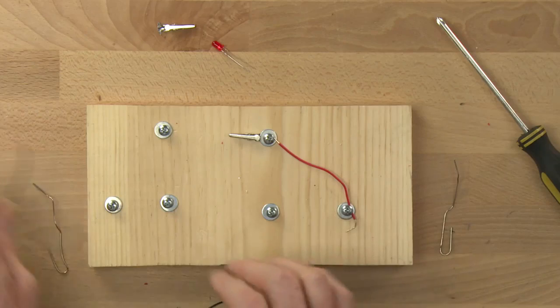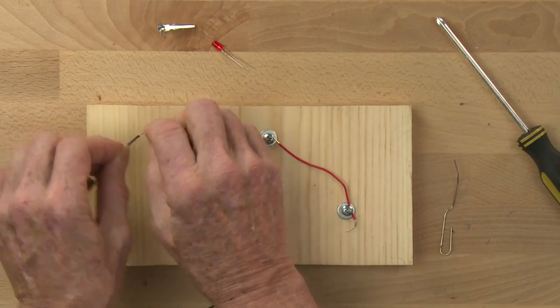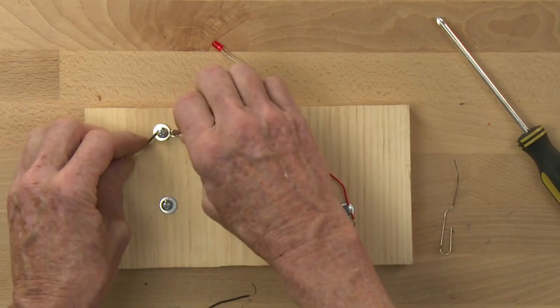And then on the other side, representing the negative end of the battery, I'll use a black lead and another flattened alligator clip.